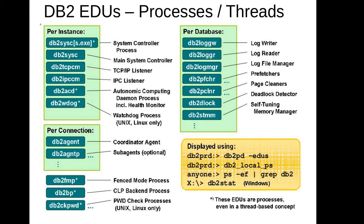I am going to touch on only the main processes which you should be aware of - there are many other internal processes that I won't cover. The main instance-level processes are: db2sysc, which is called the main system controller, and db2tcpcm, which is the TCP listener. Whenever an external connection tries to hit the database, it will come through this TCP protocol.